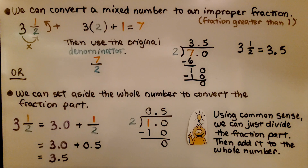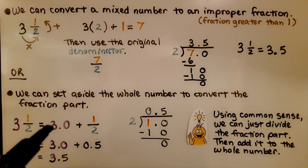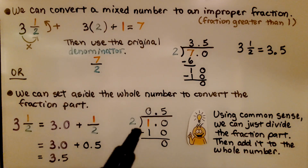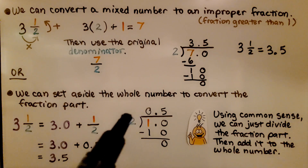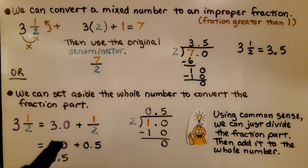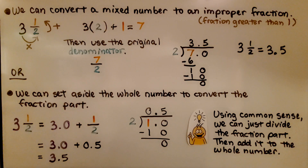We don't need to convert to an improper fraction. We can set aside the whole number and just convert the fraction part. If we have 3 and 1 half, the 3 whole number is 3 and 0 tenths. We convert the fraction part: 1 divided by 2 gives 5 tenths. Then we add 3.0 plus 0.5 and get 3 and 5 tenths. Using common sense, we can just divide the fraction part and then add it to the whole number.